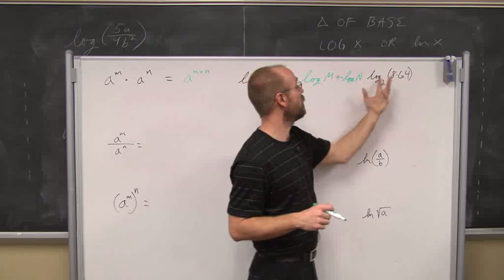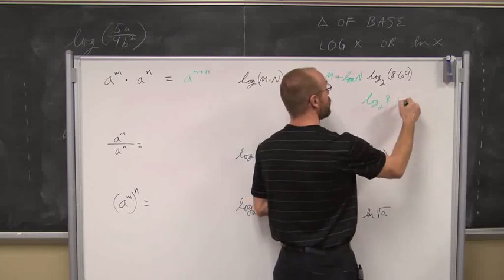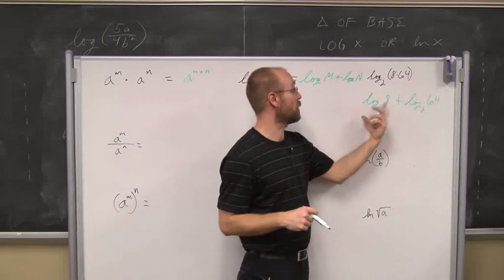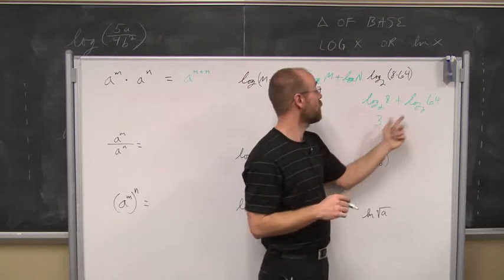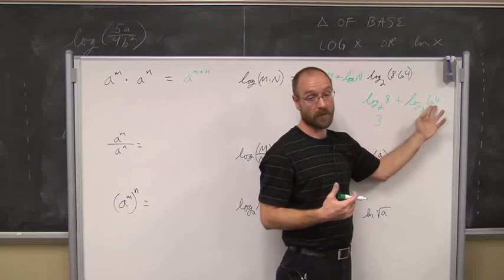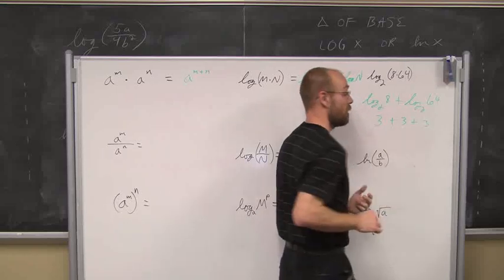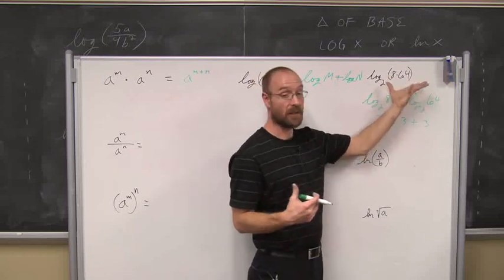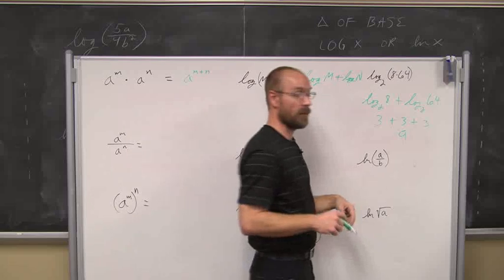Here we have log base 2 of 8 times 64. Let's break that up: log base 2 of 8 plus log base 2 of 64. I know 2 to the third is 8, so that value is 3. For 64, I can recognize it as 8 times 8, so log base 2 of 8 plus log base 2 of 8 gives 3 plus 3. And log base 2 of 8 times 64 equals 3 plus 3 plus 3, which is 9.